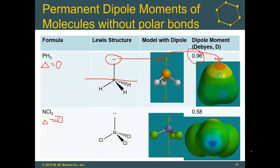Even though PH₃ has no polar bonds, it is more polar because it has an uneven distribution of electrons. The same thing happens with NCl₃, but the chlorines have their own lone pairs, which moderates the dipole moment somewhat. The chlorines are also large and push each other apart, so even though we would predict a tetrahedral molecule, the bond angles in NCl₃ might actually be a little greater than 109.5 degrees because the chlorines are so large around the nitrogen.